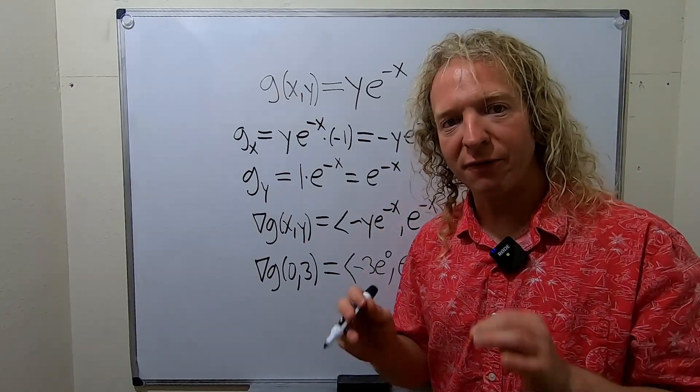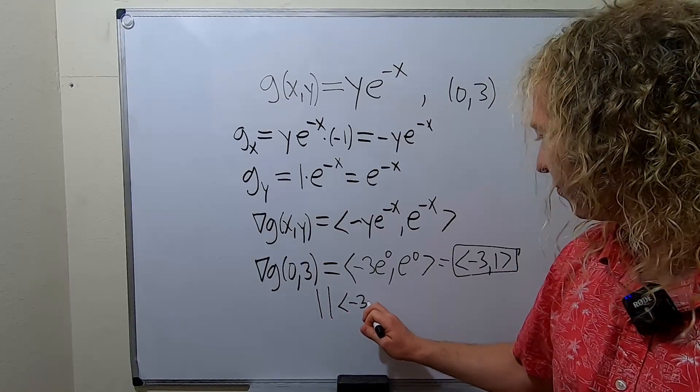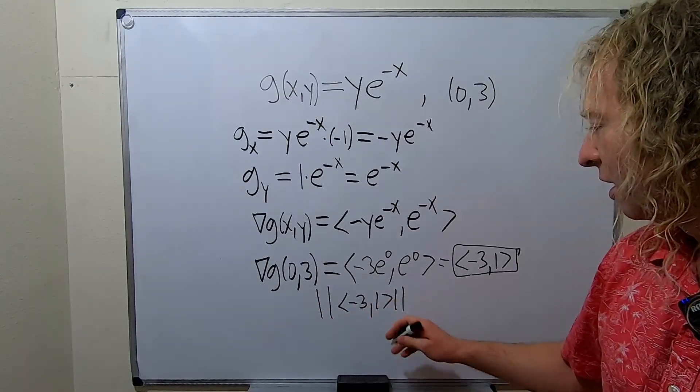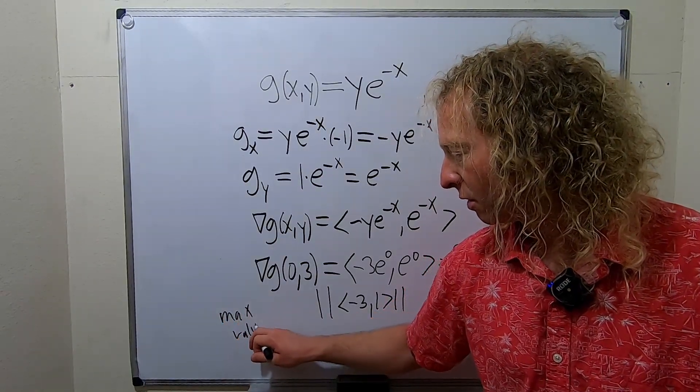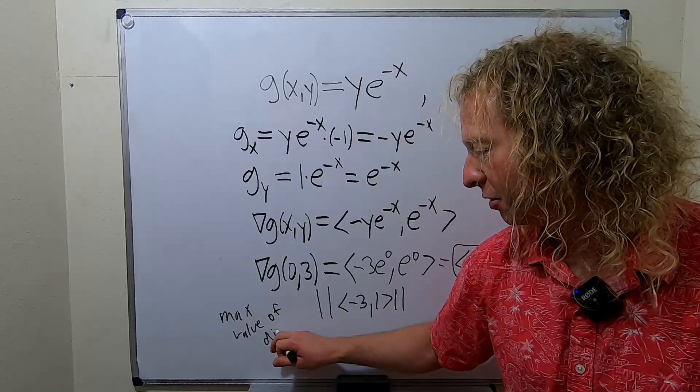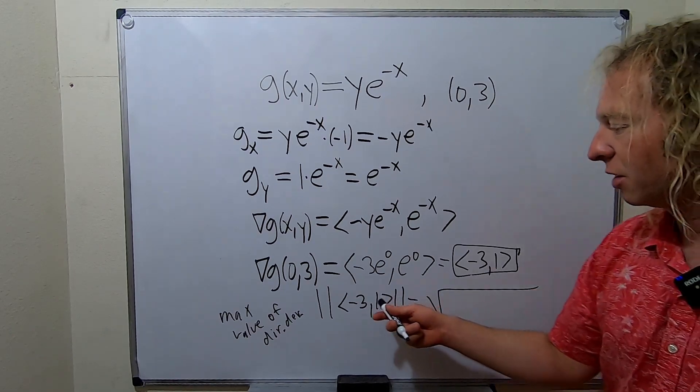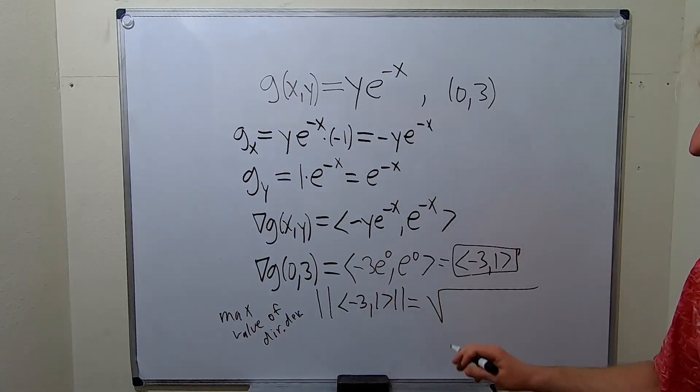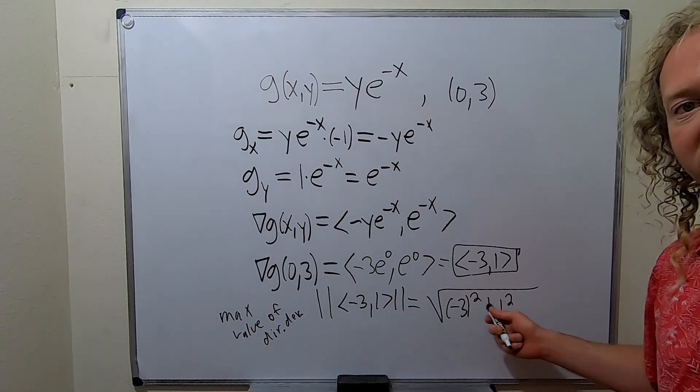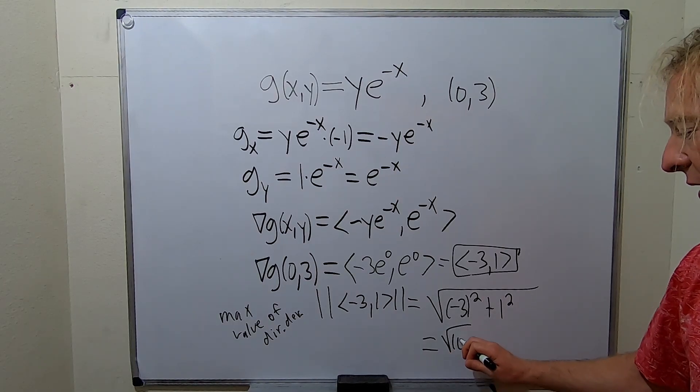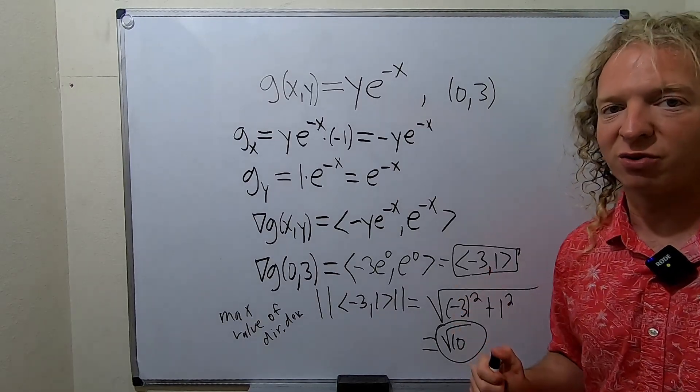Well the maximum value of the directional derivative is given by the magnitude of the gradient. So all we have to do for the next part is compute this. So this is going to be the max value of the directional derivative. To compute the magnitude you just take the square root of the square of the components. So it'd be negative 3 squared plus 1 squared. So it'd be 9 plus 1. So you end up with 10. This is 9, this is 1, 9 plus 1 is 10. This is the maximum value of the directional derivative.